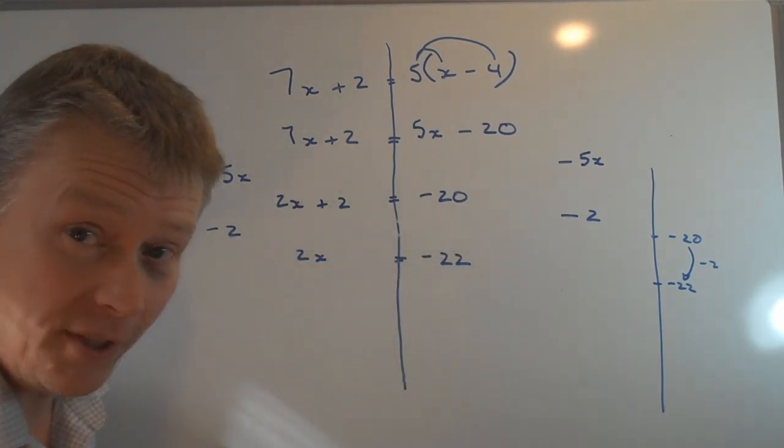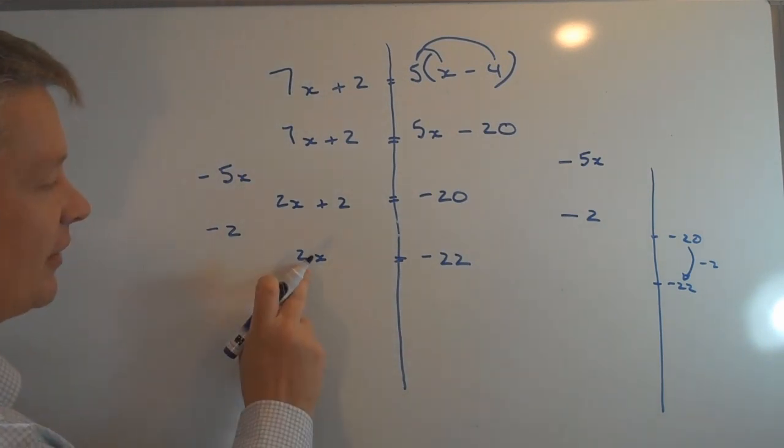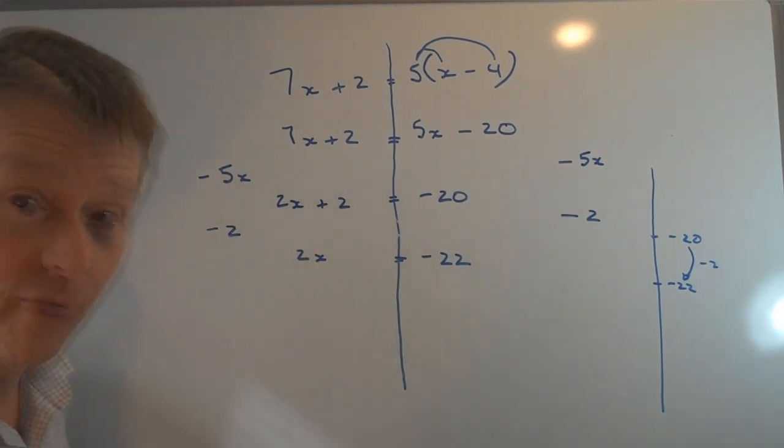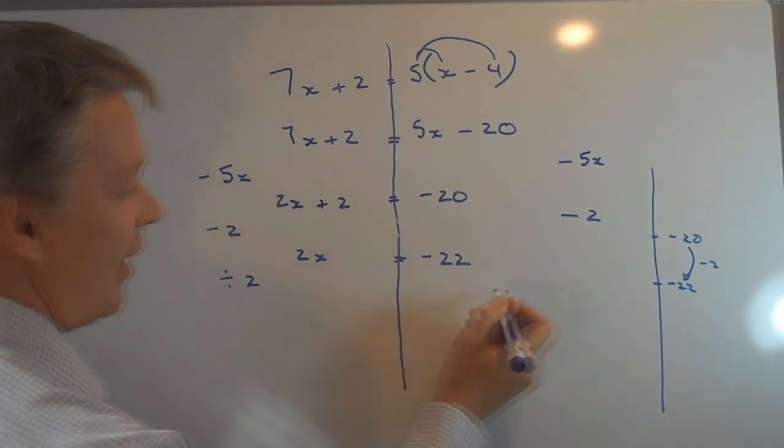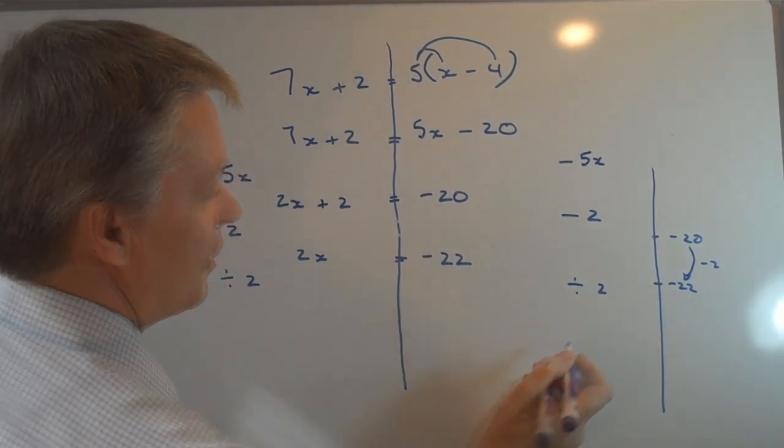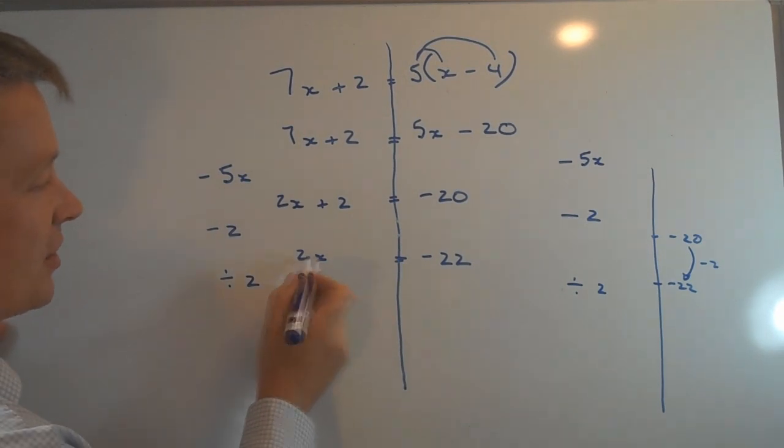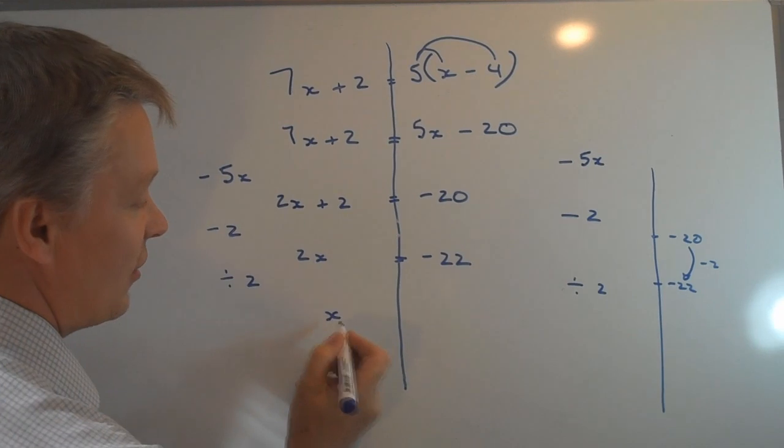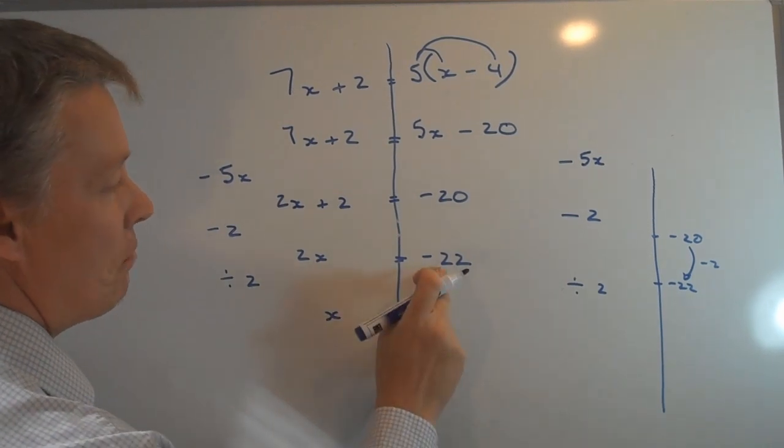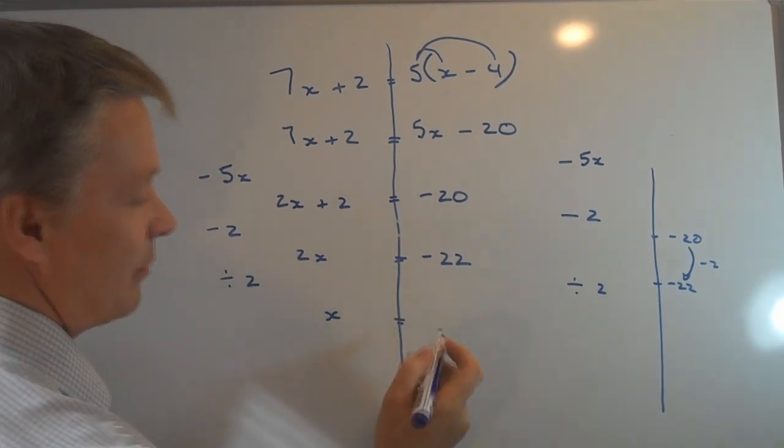So here we are with 2X equals minus 22. I need to get rid of this 2, what I'm going to do is divide both sides by 2. So I'm divide by 2 there and divide by 2 there. On this side 2X divided by 2 will give me 1X or X on its own.